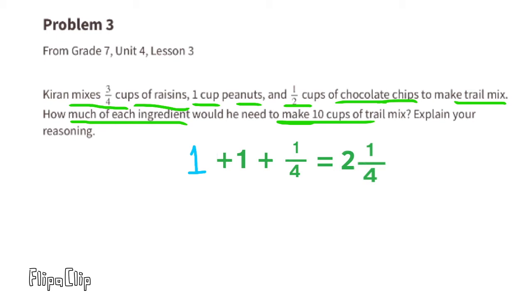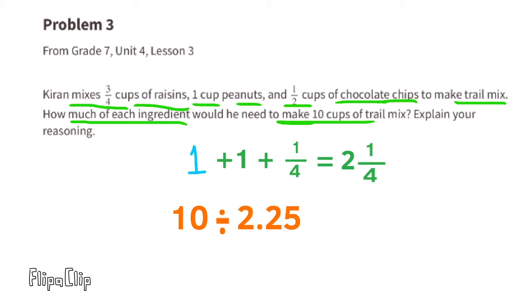Kieran's recipe makes 2 and one-quarter cups of trail mix. To make 10 cups, I need to find how many times larger 10 is compared to 2 and one-quarter. Writing 2 and one-quarter as 2.25, I calculate 10 divided by 2.25, which equals 4.4 repeating. So 10 cups of trail mix is 4.4 repeating times larger than the original recipe.